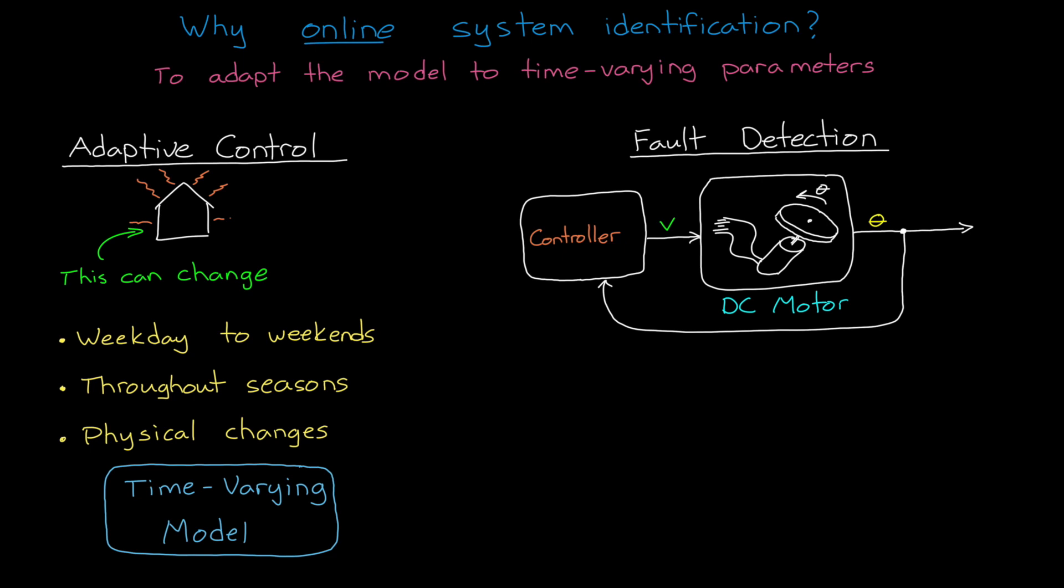The controller will compensate for this increased friction and the motor might still spin as commanded. However, this might not be ideal and so we want to detect this high friction condition and trigger a fault response.